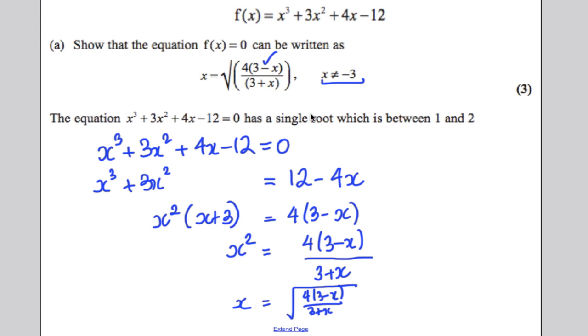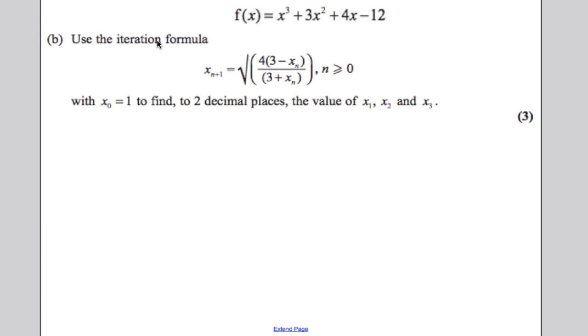It then tells us this equation has a single root between 1 and 2. And it says use the iterative formula with x0 as 1 to find, to two decimal places, the value of x1, x2, and x3.